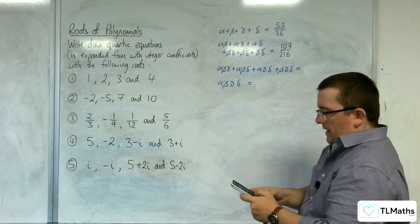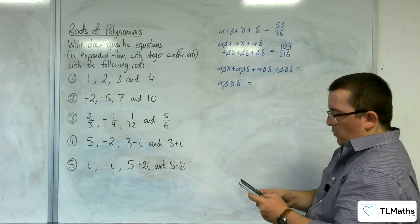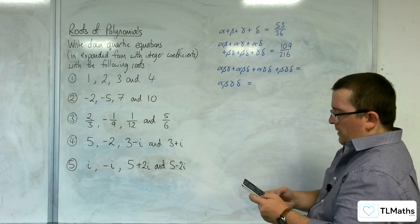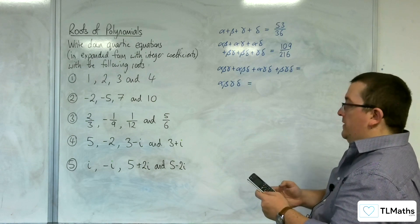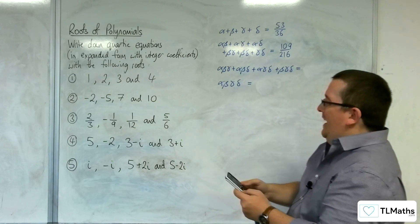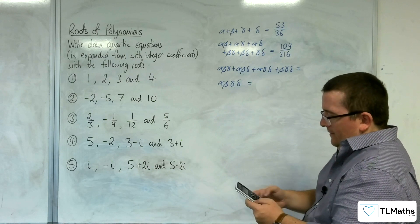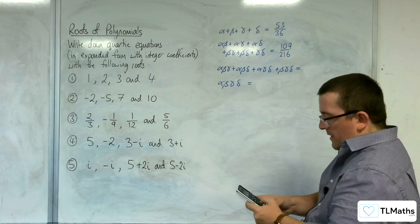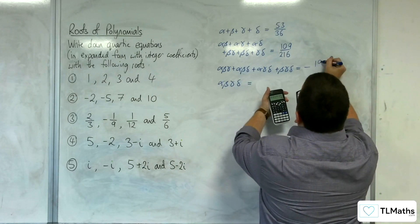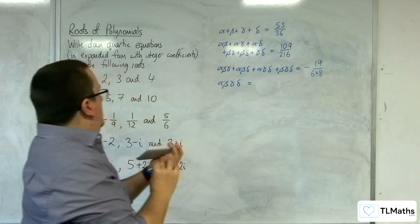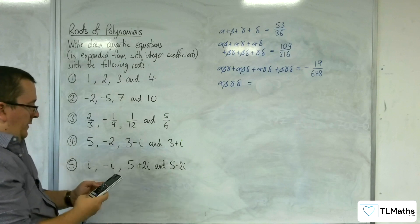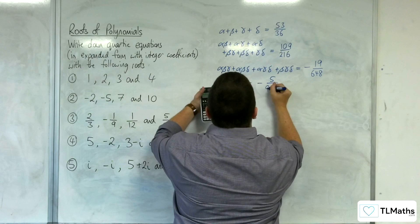Then the next one: we're going to have 2 thirds times minus 1 ninth times 1 twelfth, plus 2 thirds times minus 1 ninth times 5 sixths, plus 2 thirds times 1 twelfth times 5 sixths, plus minus 1 ninth times 1 twelfth times 5 sixths — it's difficult to keep track of them. That gives us minus 19 over 648. And then finally, 2 thirds times minus 1 ninth times 1 twelfth times 5 sixths, and we get minus 5 over 972.